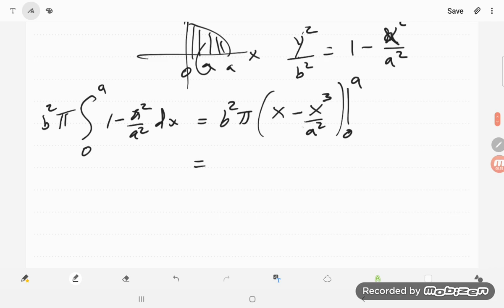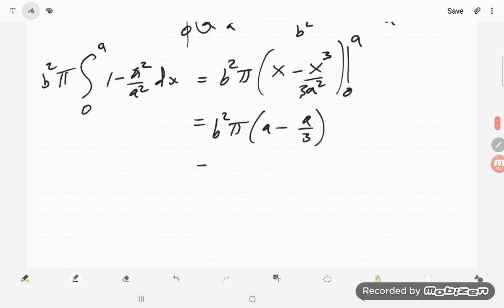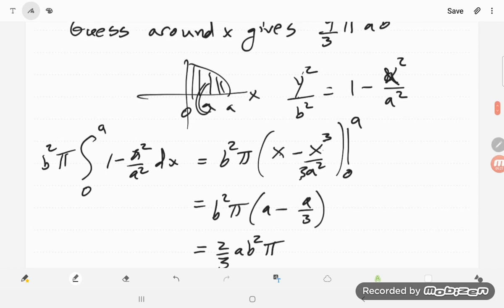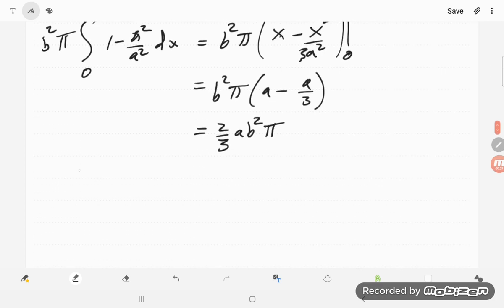When I put the a in there, I get my a minus a cubed over a squared, so that's just an a over 3. So I have my b squared pi, a minus a over 3, which is 2 thirds a. So I have my 2 thirds a b squared pi, or pi a b squared. And I need to double that because I only took this half here. And so my volume in this case is 2 times my 2 thirds pi a b squared, or 4 thirds pi a b squared.